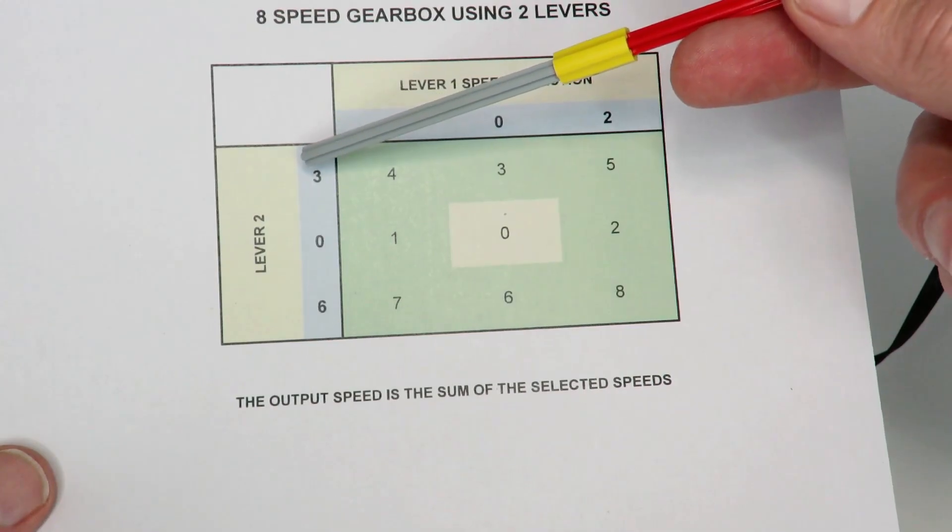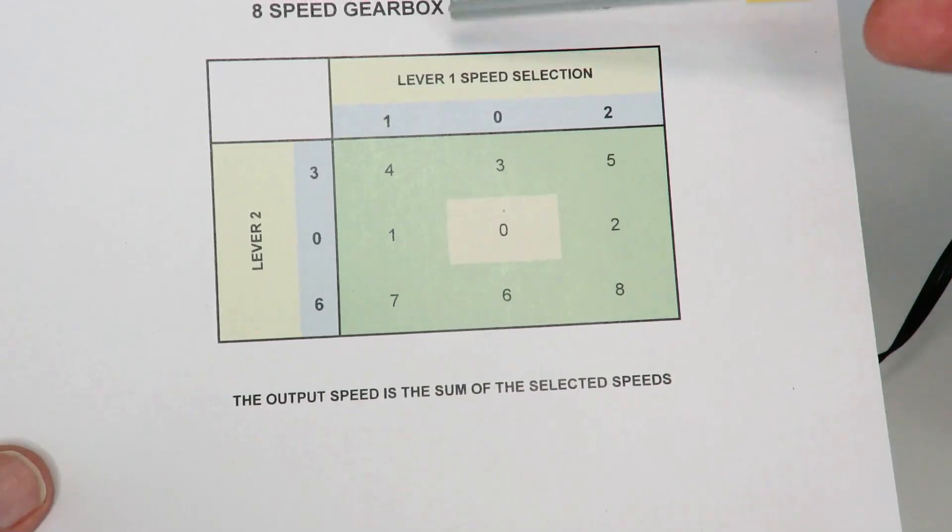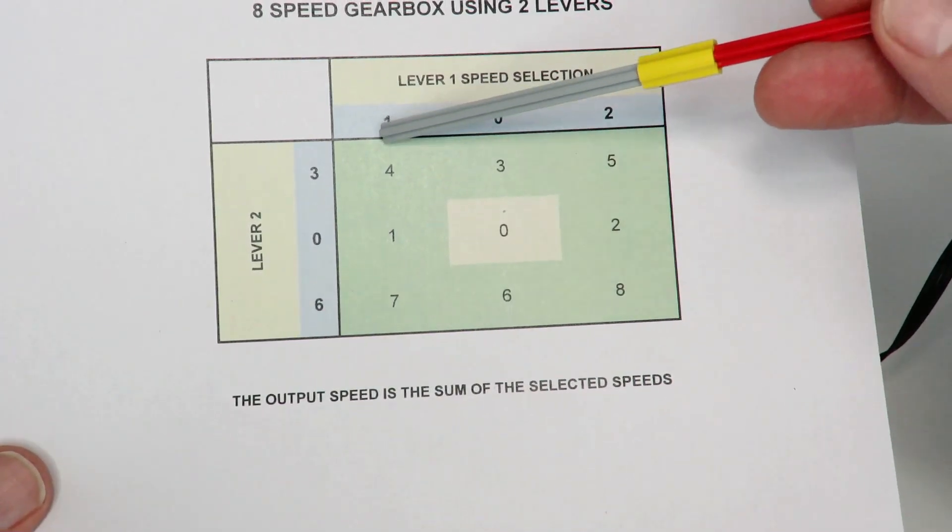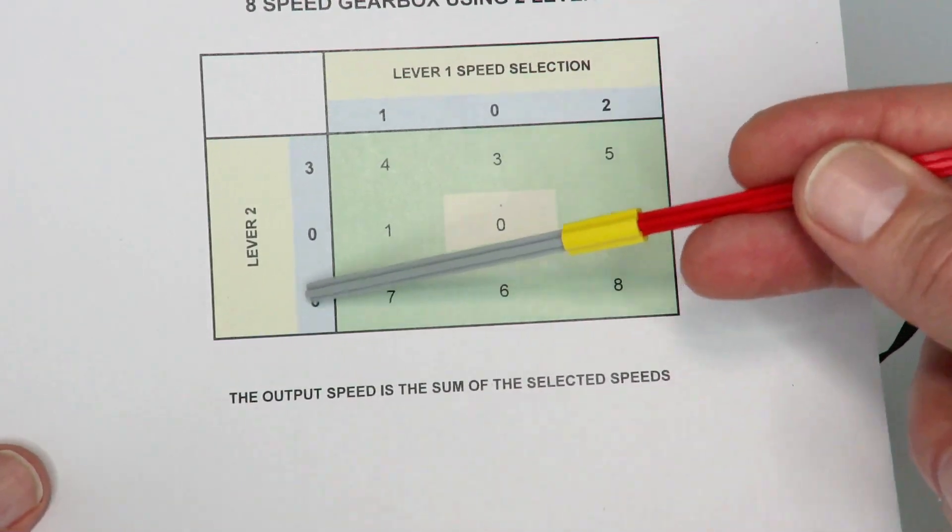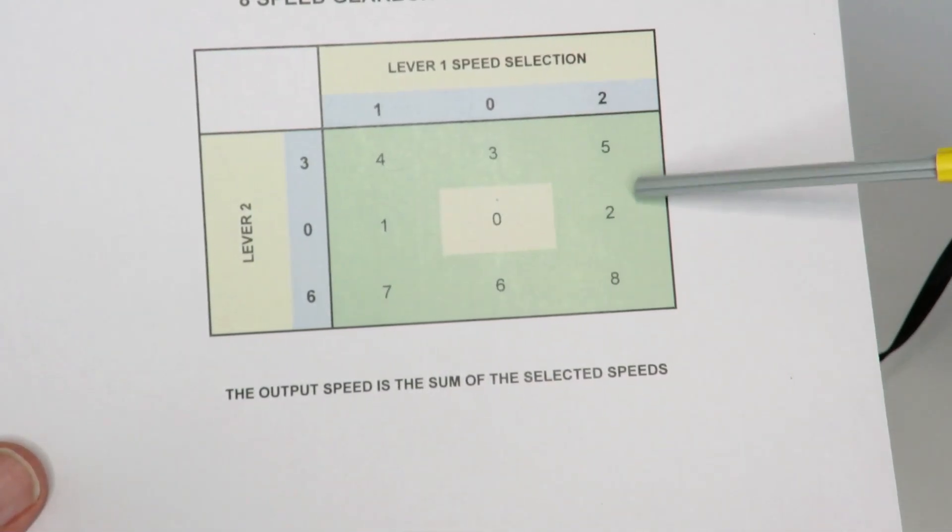And then I've got a second one which selects between speed three, zero, and six. And these are all relative speeds, so they're all relative to speed one. So for example, this is twice as fast as that one, that one's three times as fast as that one, that one is six times as fast. And by using the differential to add those two inputs together, or those two outputs together from these two lever selectors.